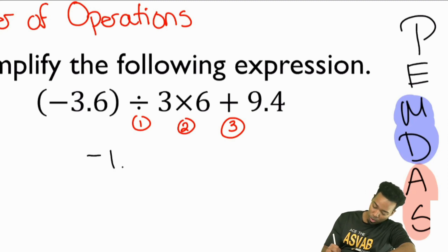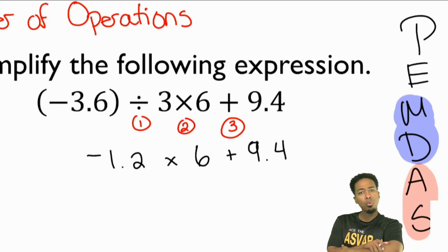So, we have negative 1.2 multiplied by 6 plus 9.4. My party people. What is 1.2 multiplied by 6? You can also think of 12 multiplied by 6, and then just bring the decimal back. That'll end up being negative 7.2. So, that'll end up becoming negative 7.2. Let me mark this up for us.